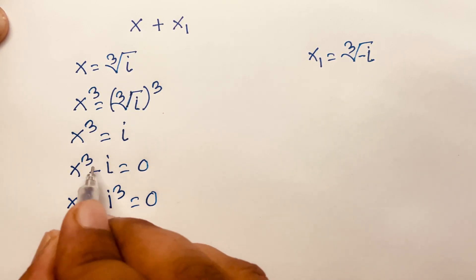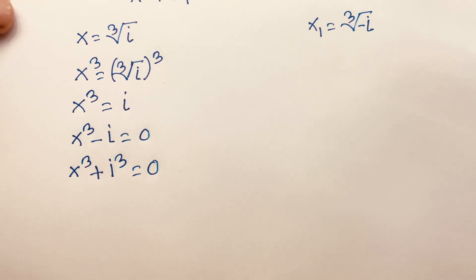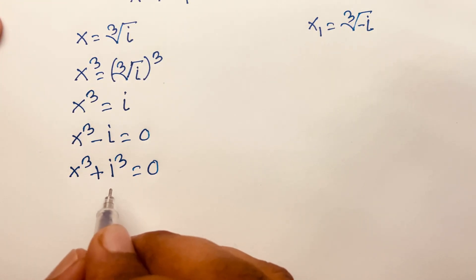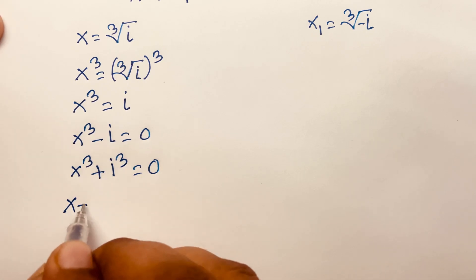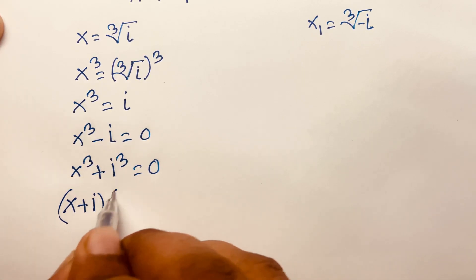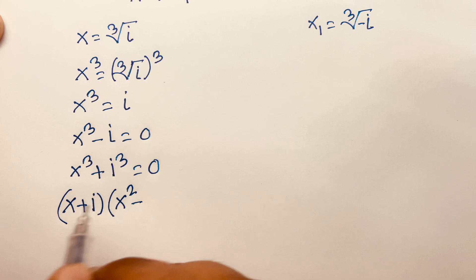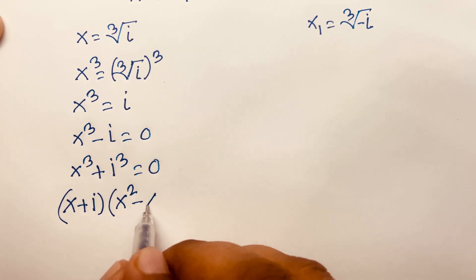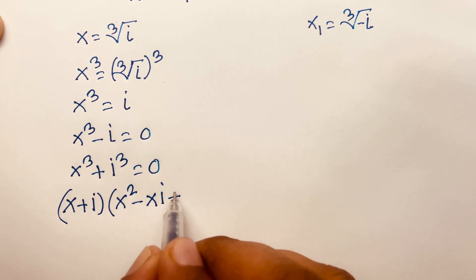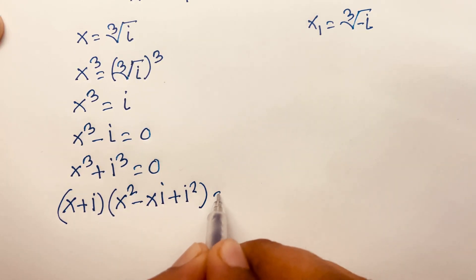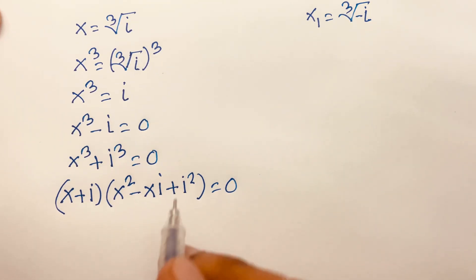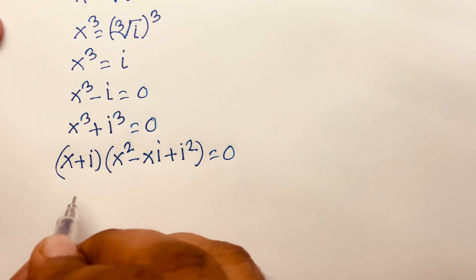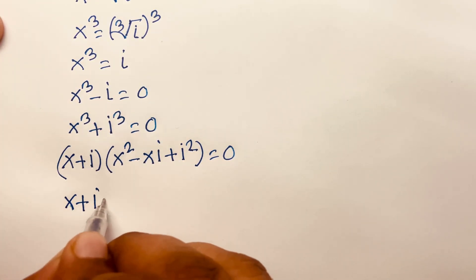I can rewrite this as x cubed plus i cubed equals zero, because i cubed equals minus i, and we have minus i. Using the identity a cubed plus b cubed equals (a plus b)(a squared minus ab plus b squared) equals zero, we get two terms. Our first case is x plus i equals zero.